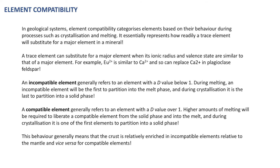An incompatible element generally refers to an element with a partition coefficient below one. During melting it will be the first to partition into the melt phase, whereas during crystallization it will be the last to partition into a solid phase. A compatible element refers to an element with a partition coefficient over one. Higher degrees of melting are required to liberate these elements from a solid phase, and during crystallization they are among the first to partition into a solid phase.